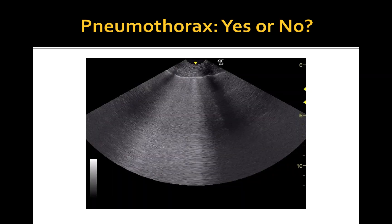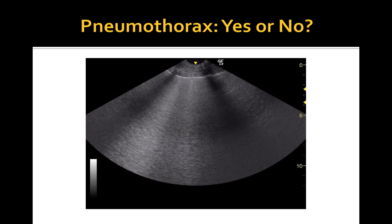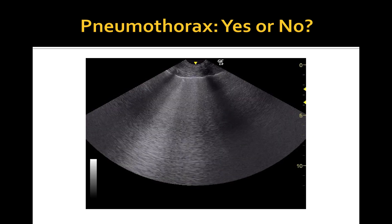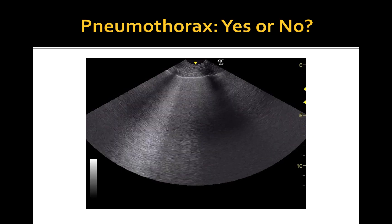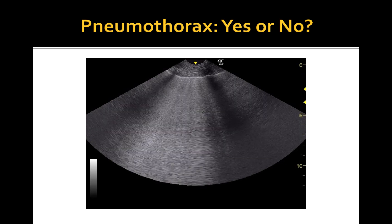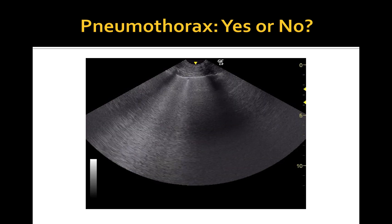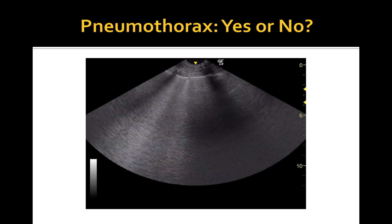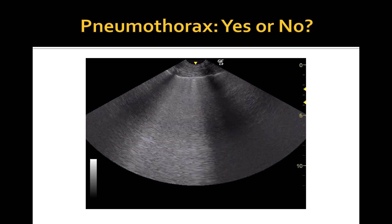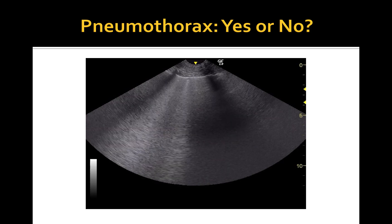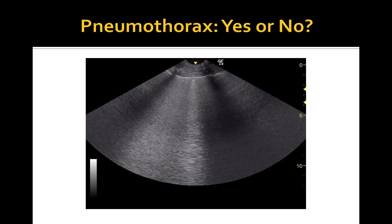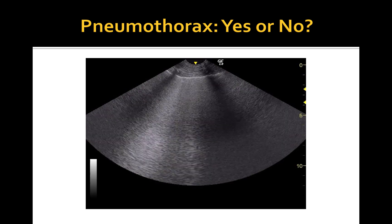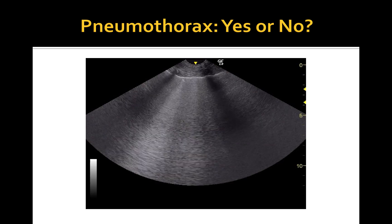In this case you can appreciate multiple ring-down artifacts or B-lines that effectively rule out the presence of pneumothorax, because in order to see them the ultrasound beam should be able to reach the visceral pleura, which may occur only in the absence of pneumothorax or air blocking the ultrasound beam.